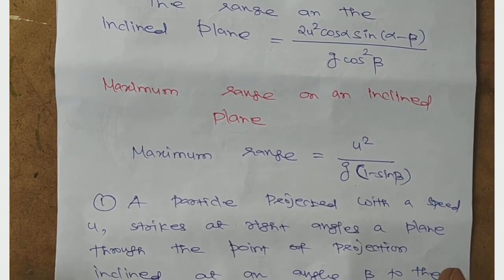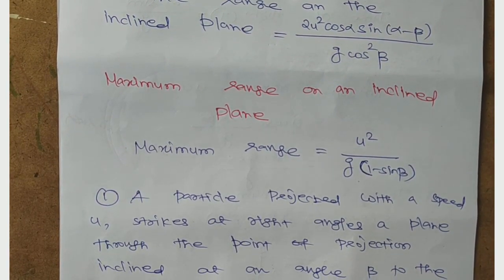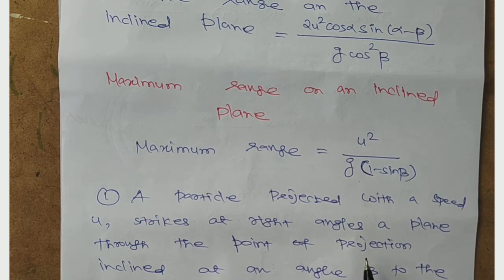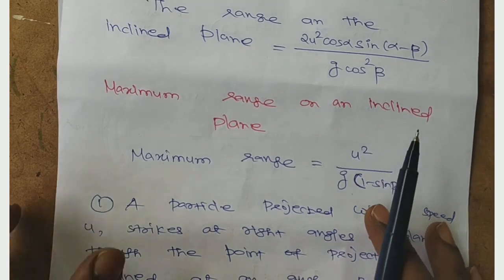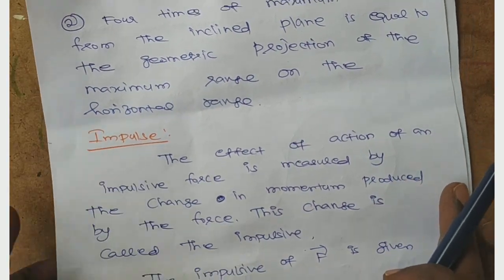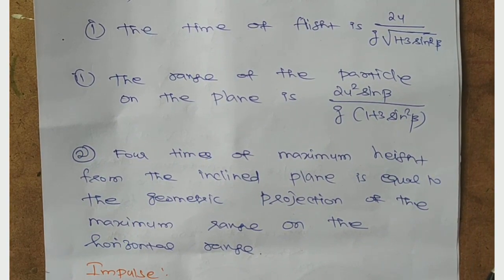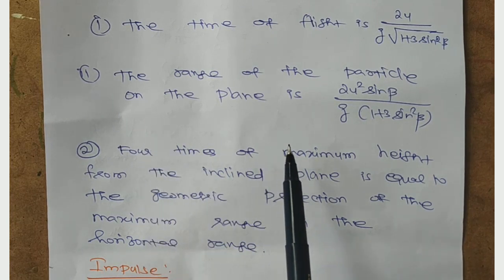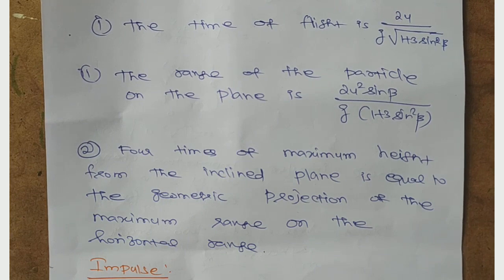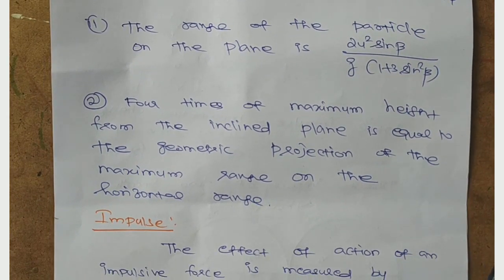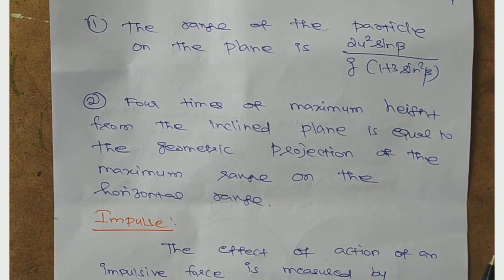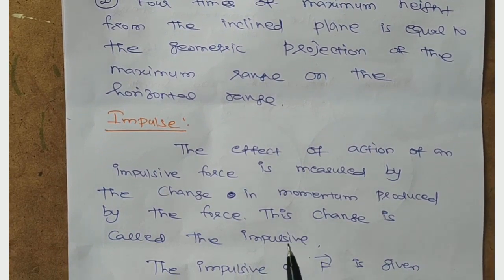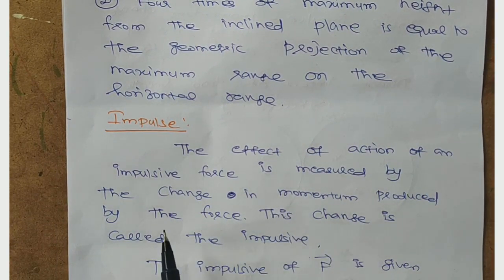The problem is: a particle projected with a speed u strikes at right angle a plane through the point of projection, which makes an angle β to the horizontal. Time of flight is 2u/g into square root of (1 + 3 sin² β). The range of the particle on the plane is 2u² sin β/g into (1 + 3 sin² β). Next, 4 times the maximum height from the inclined plane is equal to geometric projection of the maximum range on the horizontal range.